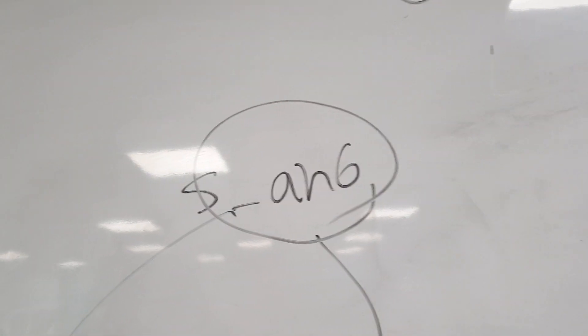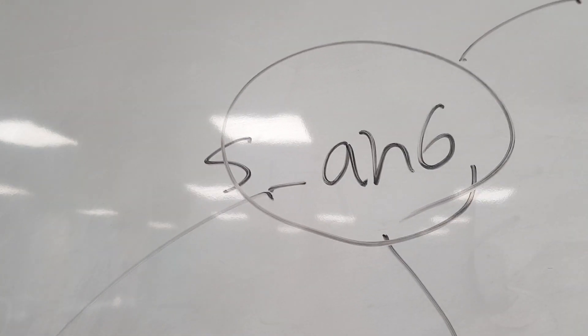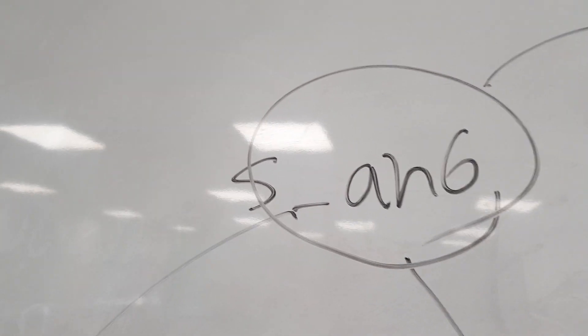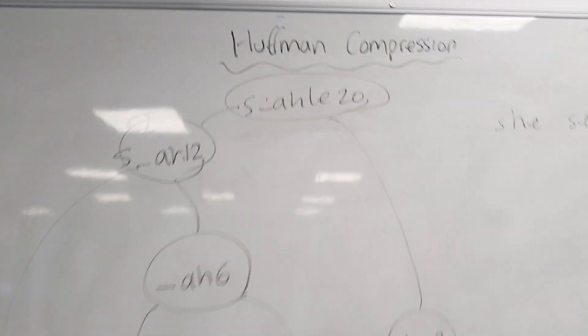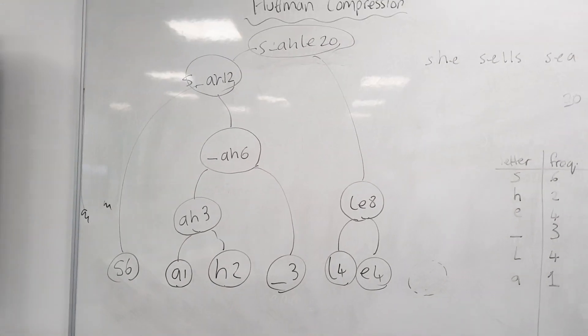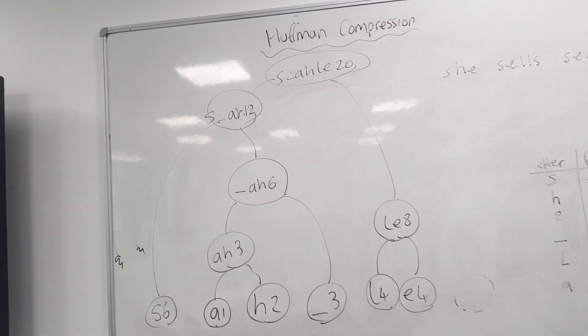So we combine S six with space-AH six, and then we finally combine everything together to get S-space-AH-LE 20. Sorry that should be 12. That's what we end up with. We end up creating this kind of diagram, this tree diagram. This is essentially what the Huffman tree is.